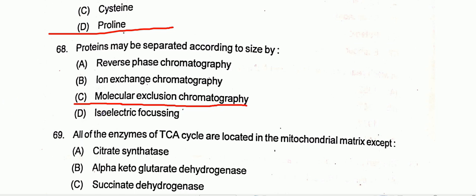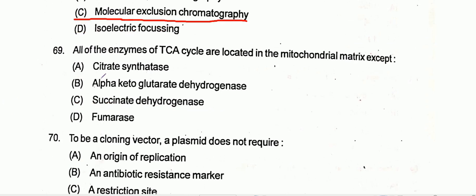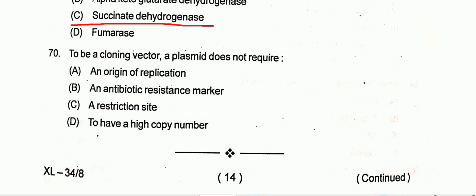Question number 69: All of the enzymes of the TCA cycle are located in the mitochondrial matrix, except succinate dehydrogenase, which is present in the inner membrane.